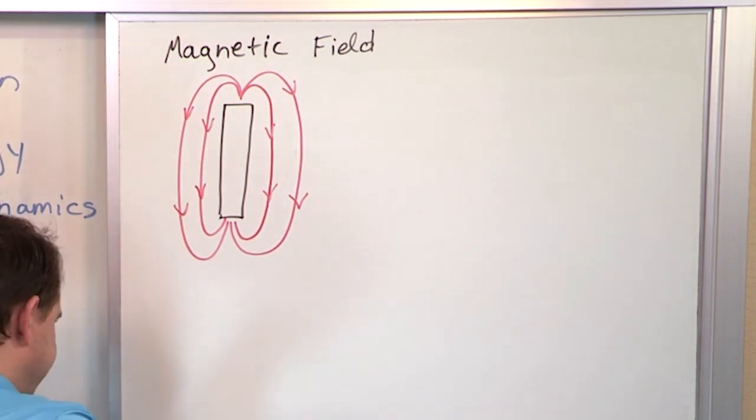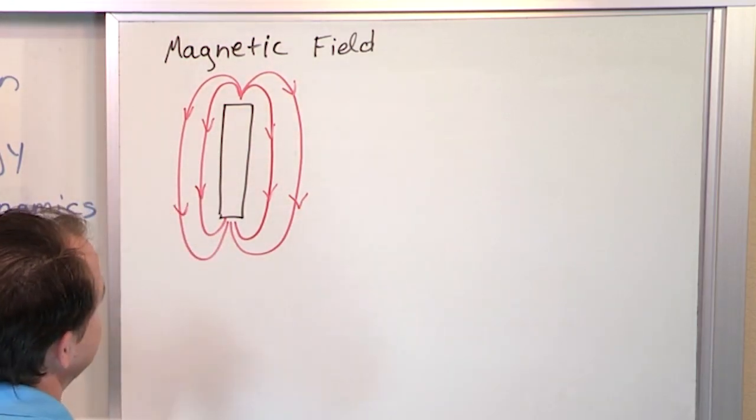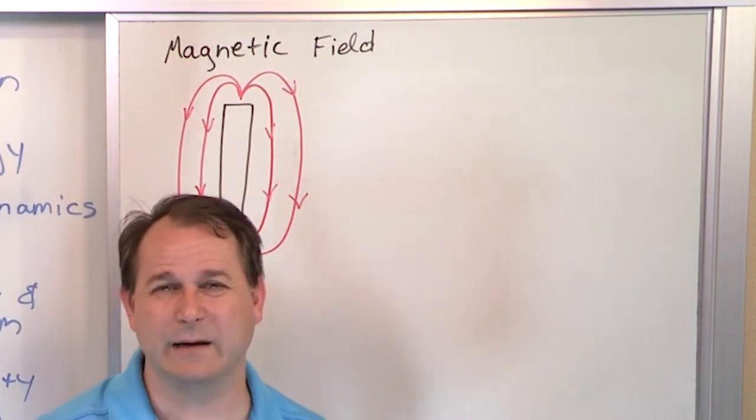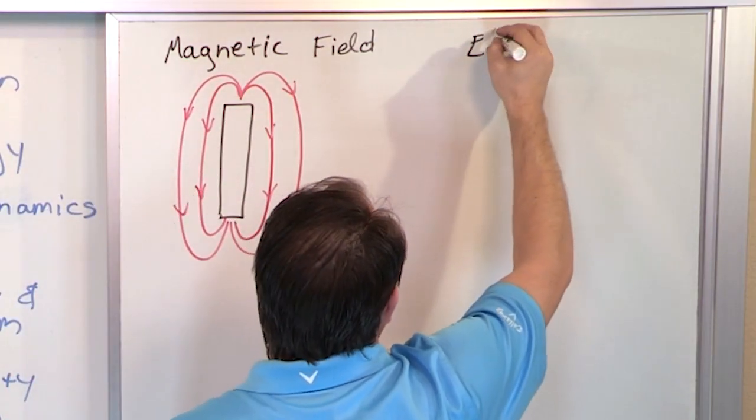And then we have, analogously to this magnetic field, an electric field. I told you, they're kind of like peanut butter and jelly. So if this is the peanut butter, the jelly is called the electric field.